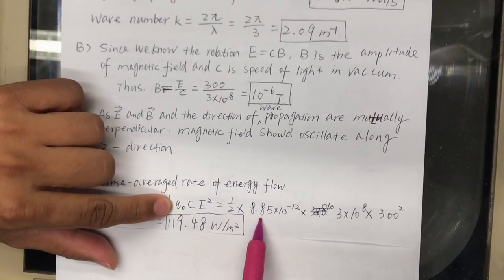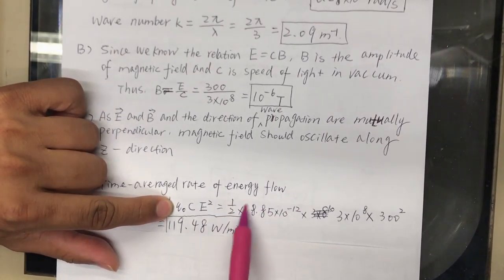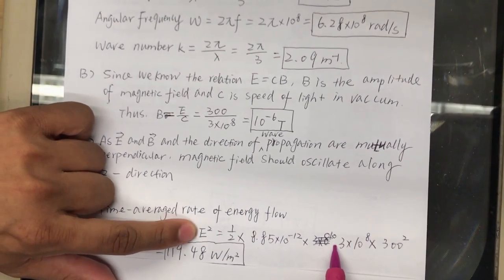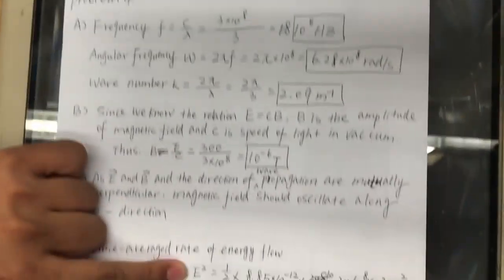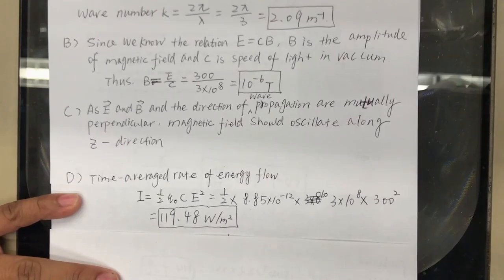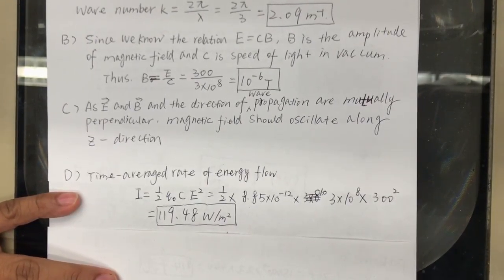One-half times epsilon naught, it's the value of epsilon naught. Speed of light, we have here, electric field again, 300 volts per meter. We get 119.48 watts per meter squared.